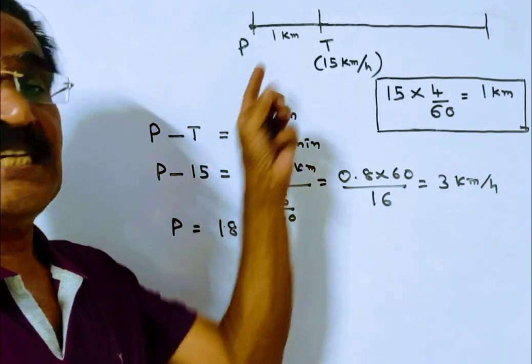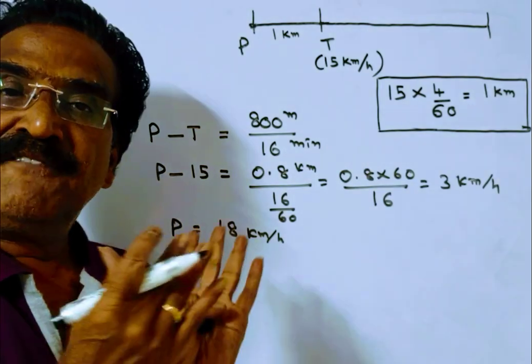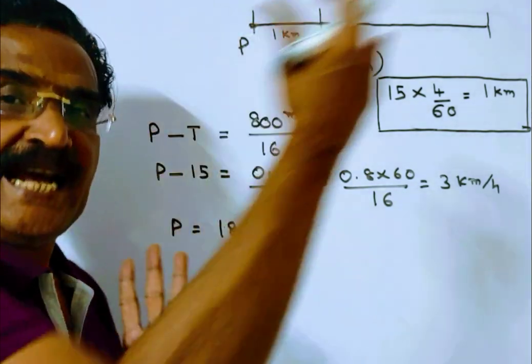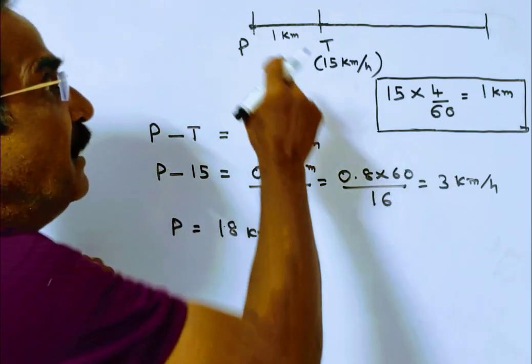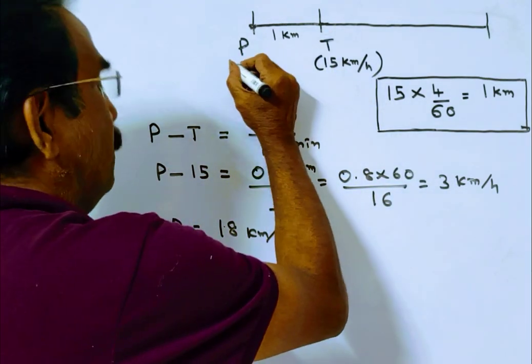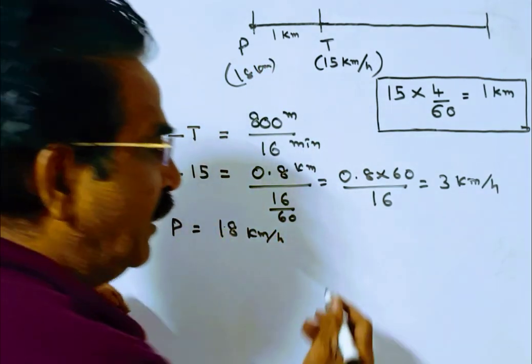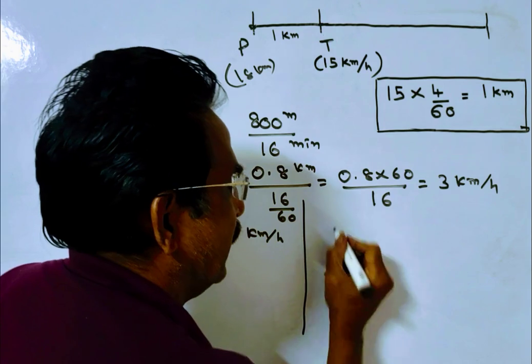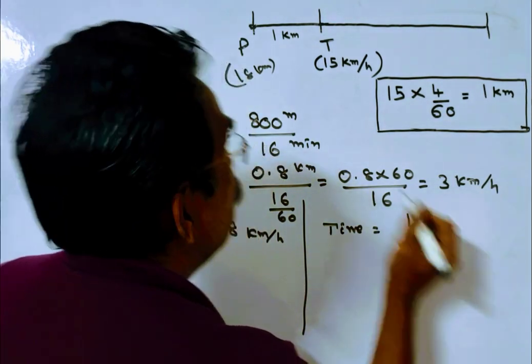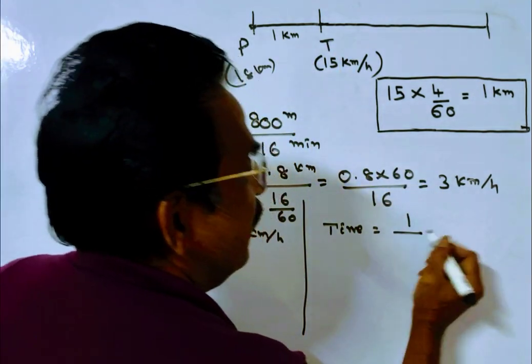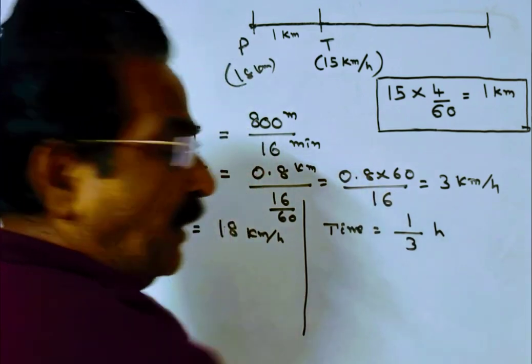Initially the distance between the police and the thief is 1 km. Time taken to catch the thief equals initial distance divided by relative velocity. That's 1 km divided by (18 minus 15), which equals 1 divided by 3 kmph, equals 1/3 hour.